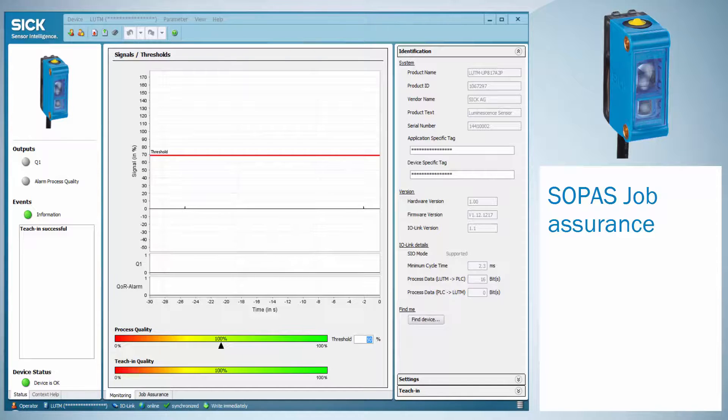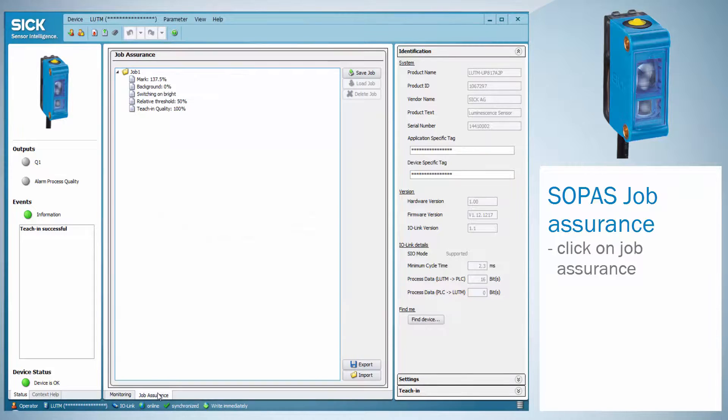The stored values for a certain job can be exported and stored by using the job assurance flag. The job contains the information about relative luminescence of the mark in the background, as well as the switching mode, light switching or dark switching, the set relative threshold as well as the teach-in quality. The job assurance mode shows a quick and easy format change during production.